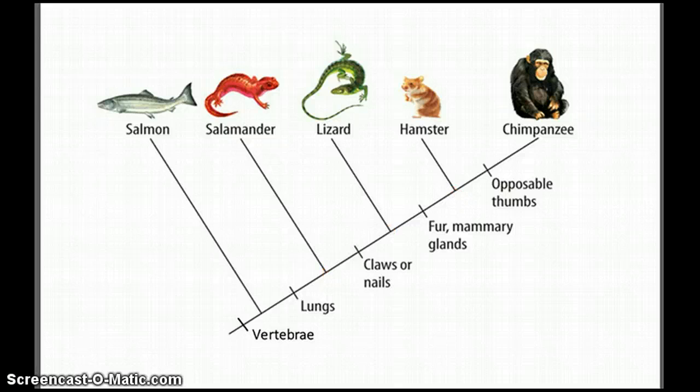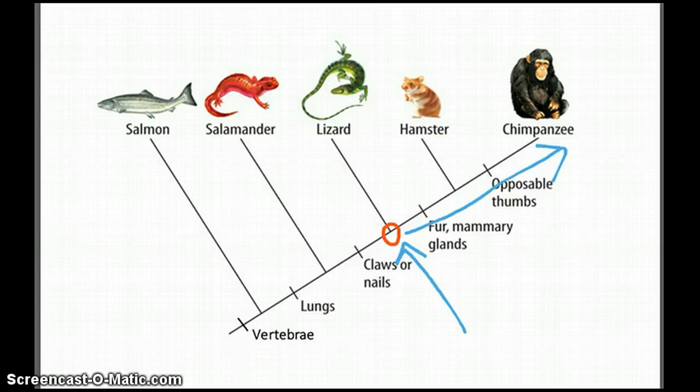If we look at any particular point, like right here, this point represents the common ancestor of all organisms after this point. This organism right here is the common ancestor of lizards, hamsters, and chimpanzees.